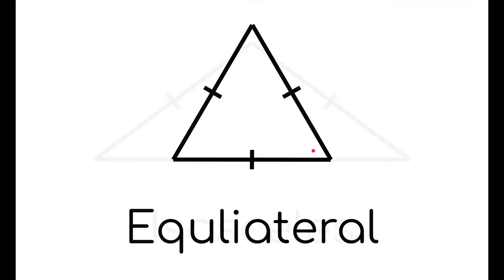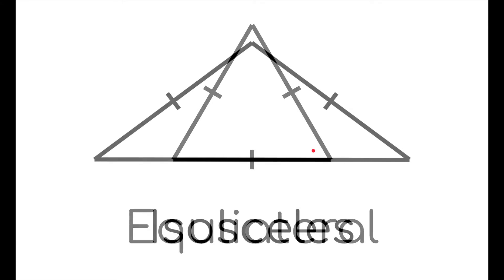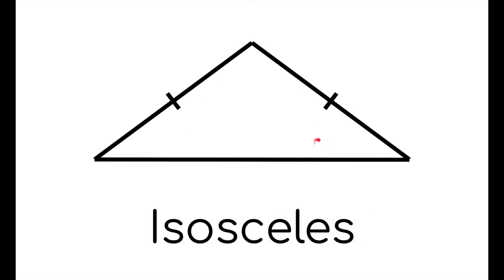An isosceles triangle is a triangle with two sides that are the same, but not necessarily the third one. An isosceles triangle has the property that these two angles are the same. Note that an equilateral triangle is also an isosceles triangle.